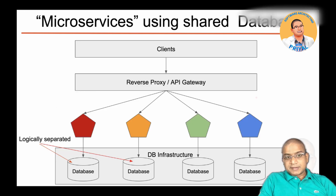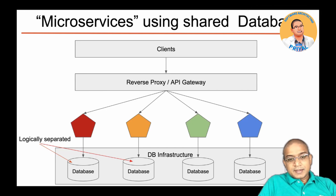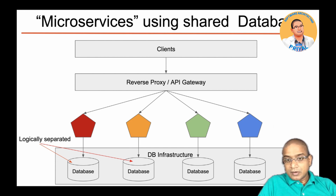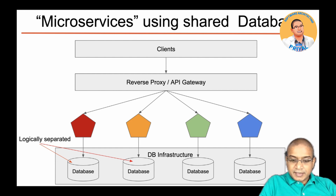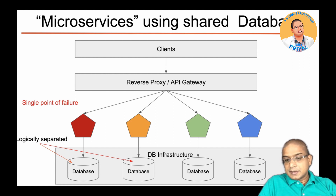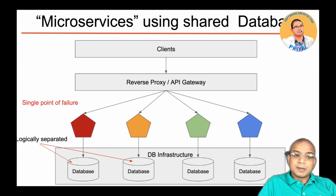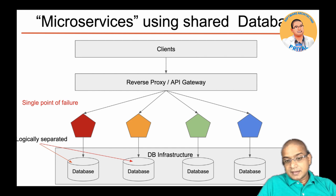So what can we do about this? The simplest thing is to have one single database per service, or at minimum, only a few services depending on one particular database. Initially we can have one database server with logically separated databases, as depicted in this picture. This is better than the previous architecture, but it still has some problems — it is still a single point of failure because all those logically separated databases are hosted on one database server or infrastructure.